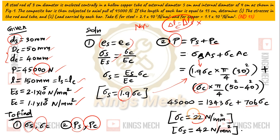We get 22 newton per mm square and 1.9, multiply we get 42.